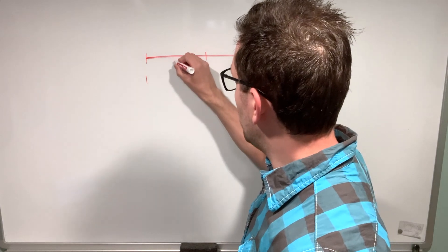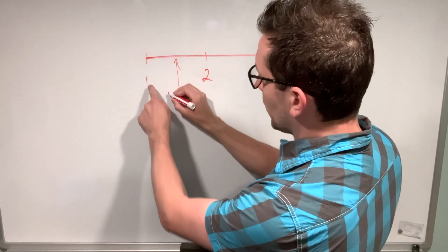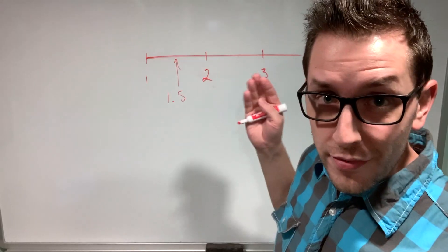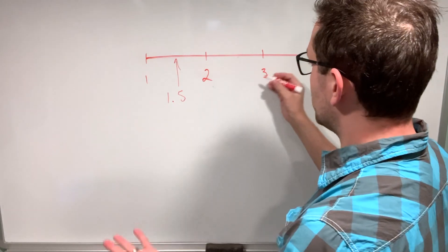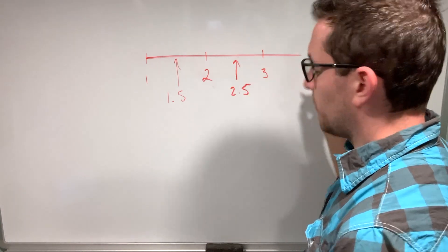All of a sudden, I have another number in between one and two that is bigger than one by 0.5. If I did that for every single integer on my number line, I would have an additional number in between each integer: 2.5, 3.5, and so on.